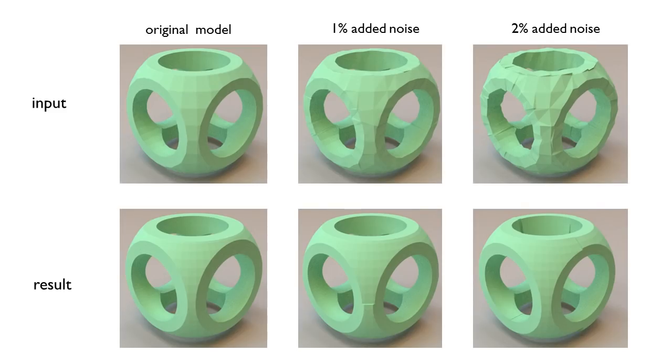Our robust algorithm is able to generate CSG trees for noisy input. This example shows reconstructed results for an input mesh with perturbations of different magnitudes.